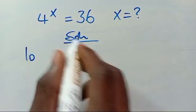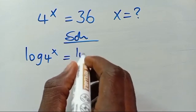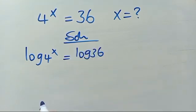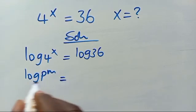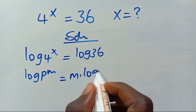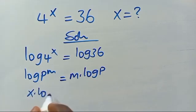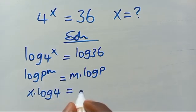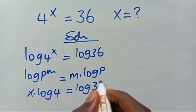Let's take the log of both sides: log 4 to the power of x equals log 36. We recall that when we have log p to the power of m, it equals the power m brought down, multiplied by log p. So from here, this power x comes down to give us x multiplied by log 4 equals log 36.